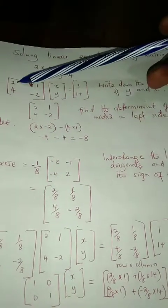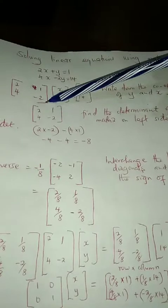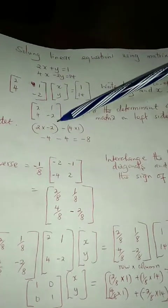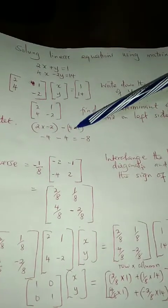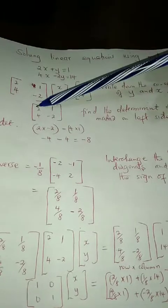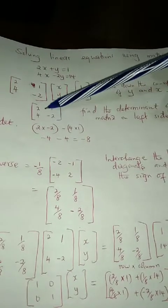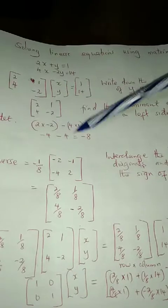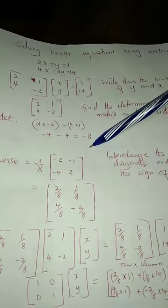This one here by multiplying 2 times negative 2 in that order, 2 times negative 2 minus 4 times 1. You multiply the leading diagonals first, so that one if you solve you will get negative 8.